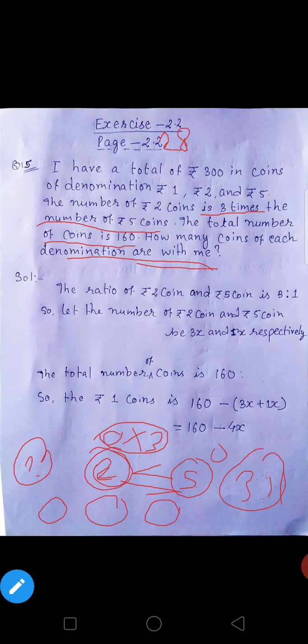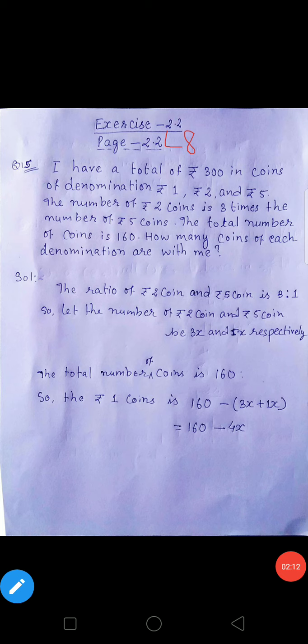2 rupiah wala 3 guna kis se jyada hai? 5 rupiah se jyada hai. So first, the ratio of 2 coins and 5 coins is how much? 3 is to 1. Obviously, the ratio of 2 and 5 coins hamara 3 is to 1.